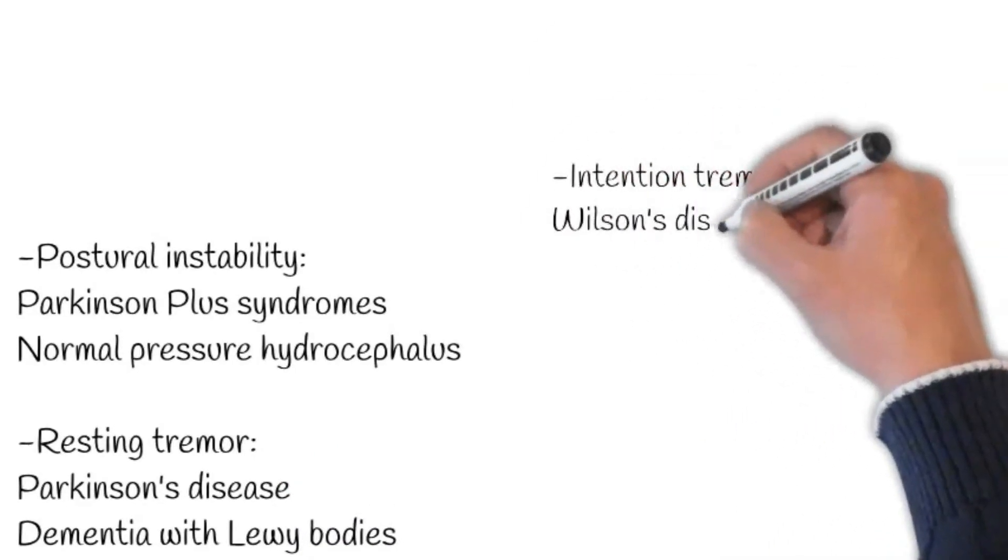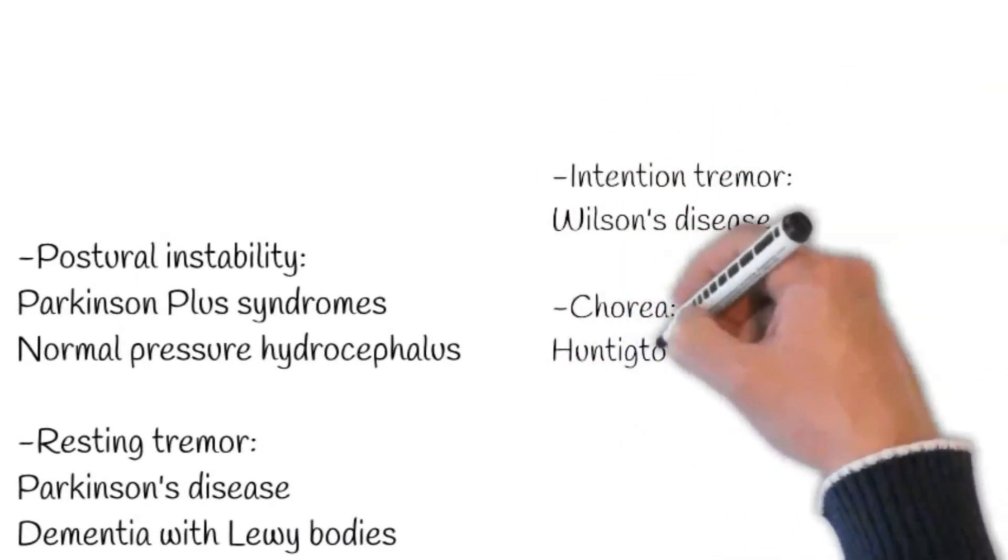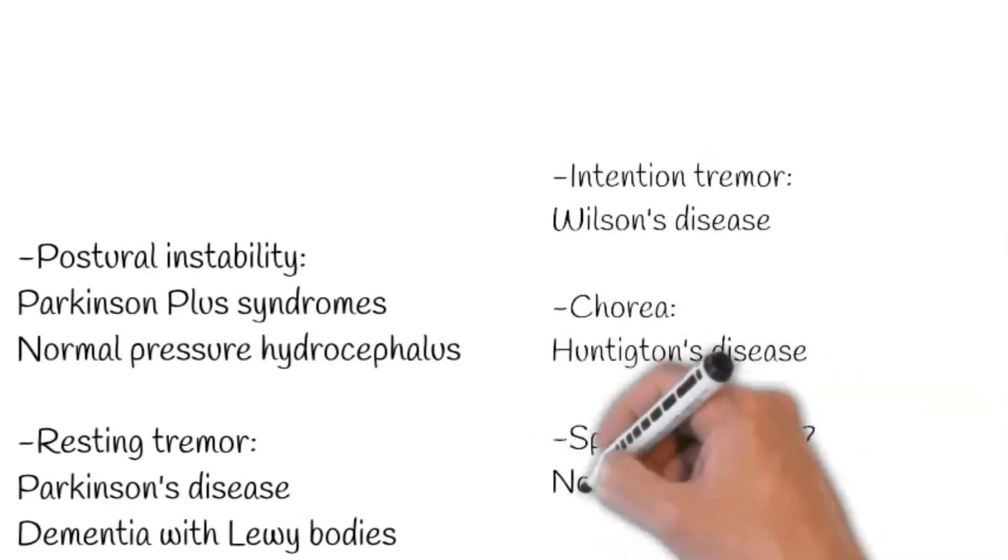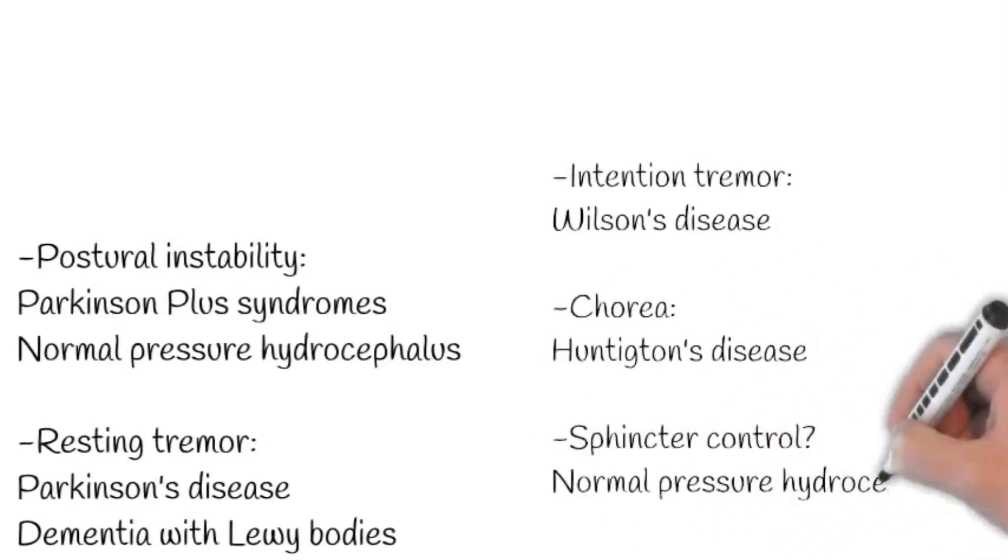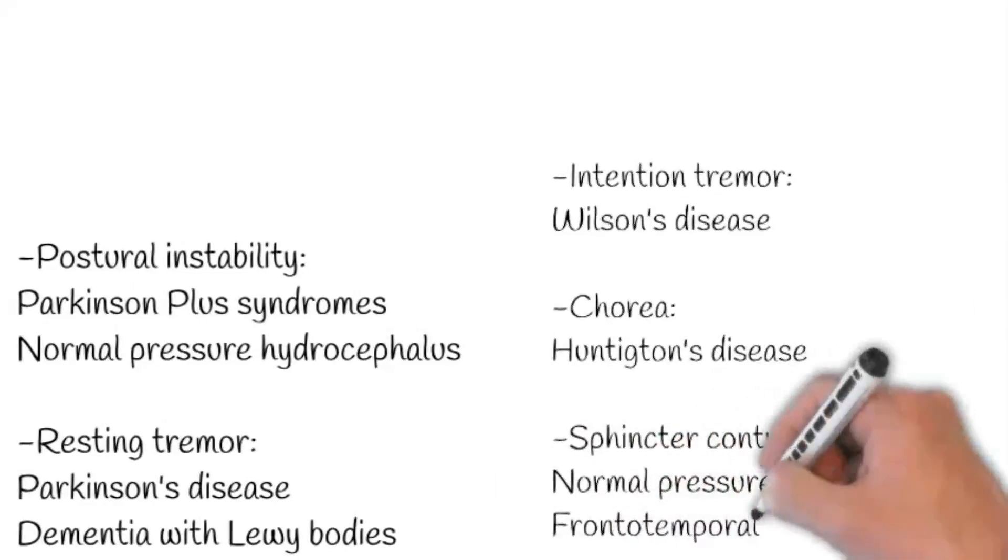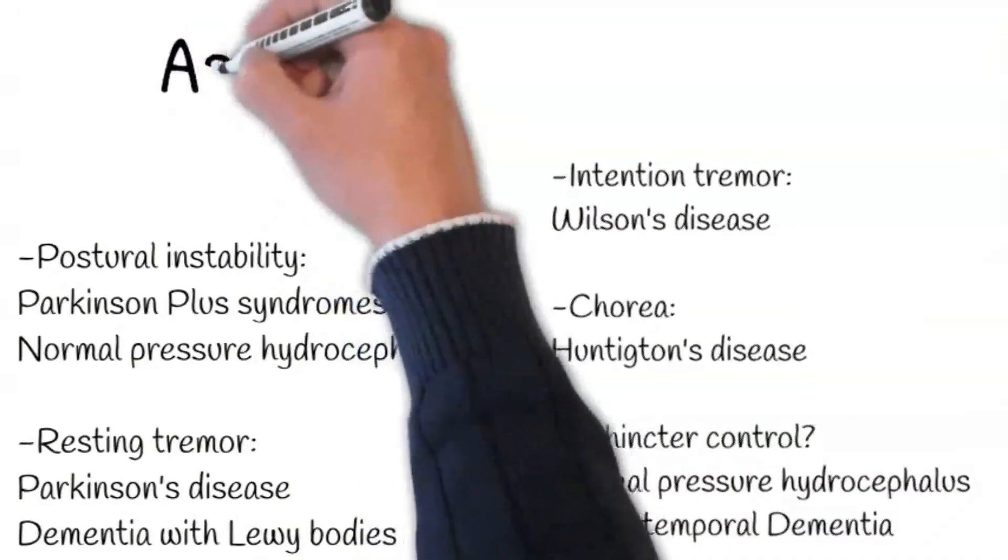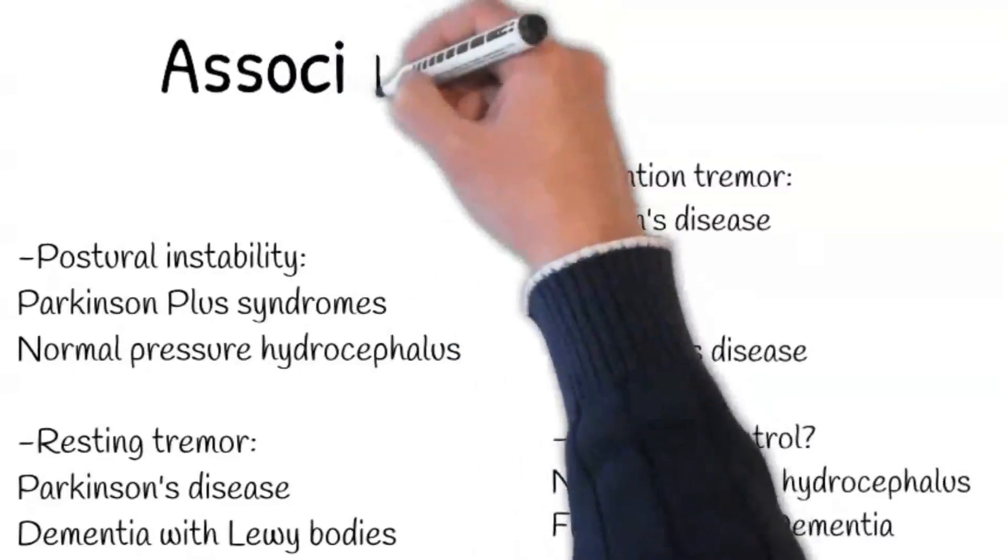As resting tremor occurs in Parkinson's disease and dementia with Lewy bodies, whereas intention tremor and dystonia, stiffness or cramps of the limbs may occur in Wilson's disease. Furthermore, chorea, writhing movements are present in Huntington's disease.